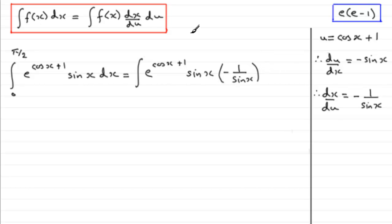That's now integrated with respect to u. But because we're integrating with respect to u, we need to change our limits, which are limits with respect to x. We do this by saying when x is 0, we can put it in here and get what u is. So when x equals 0, we end up with u equaling the cosine of 0 plus 1.